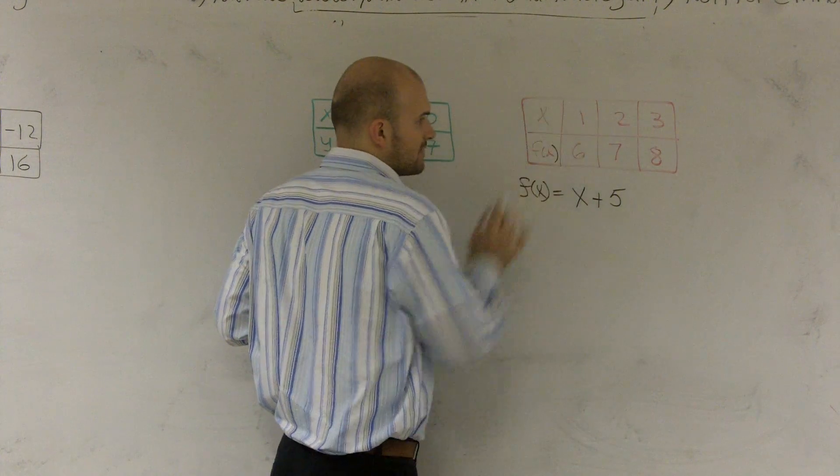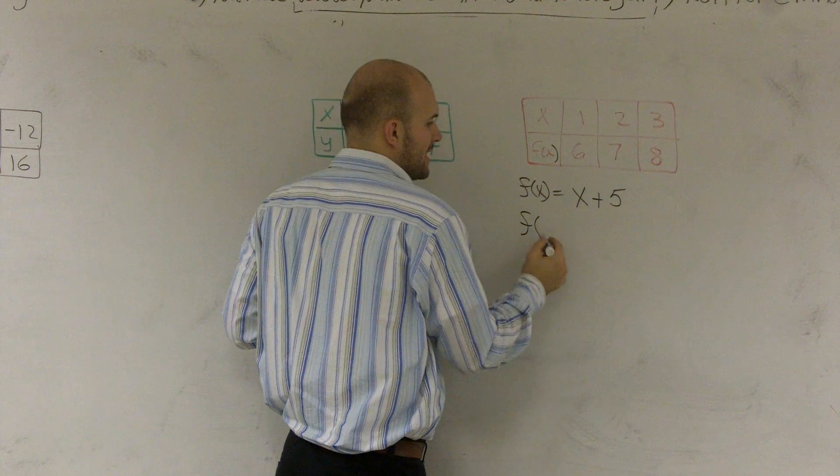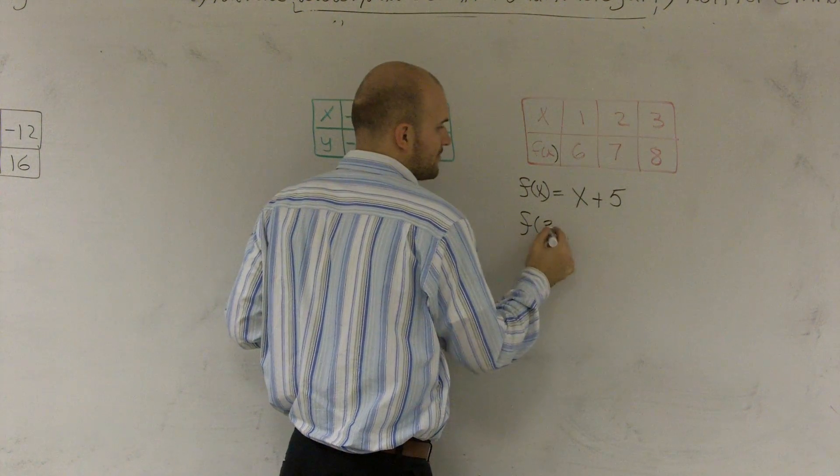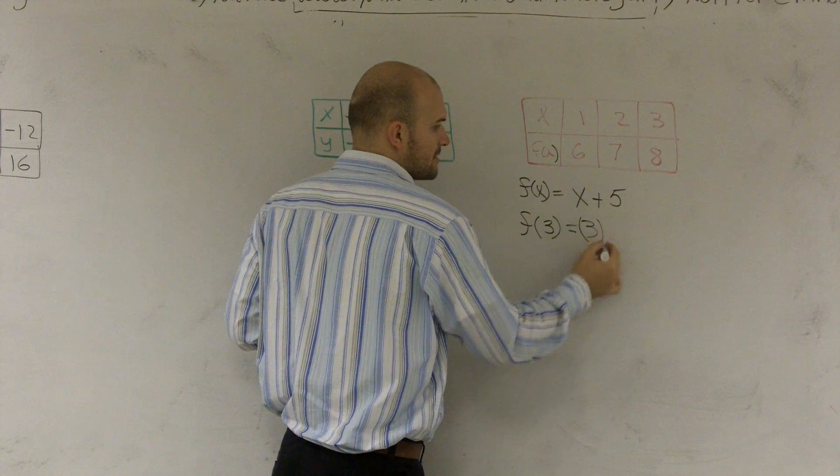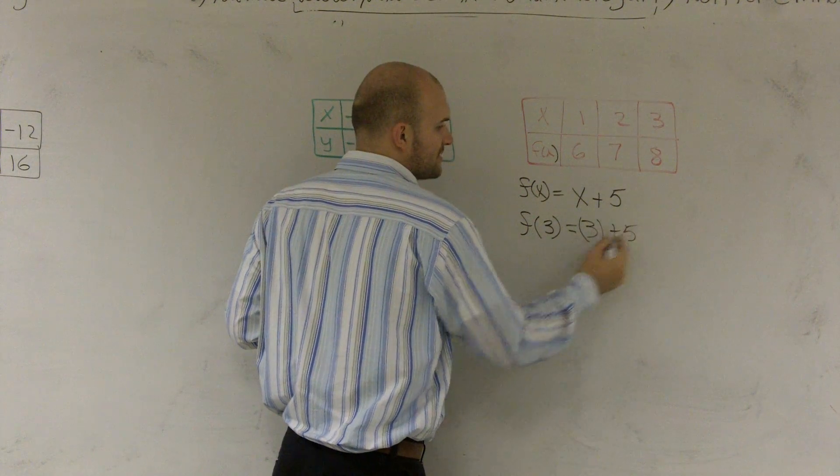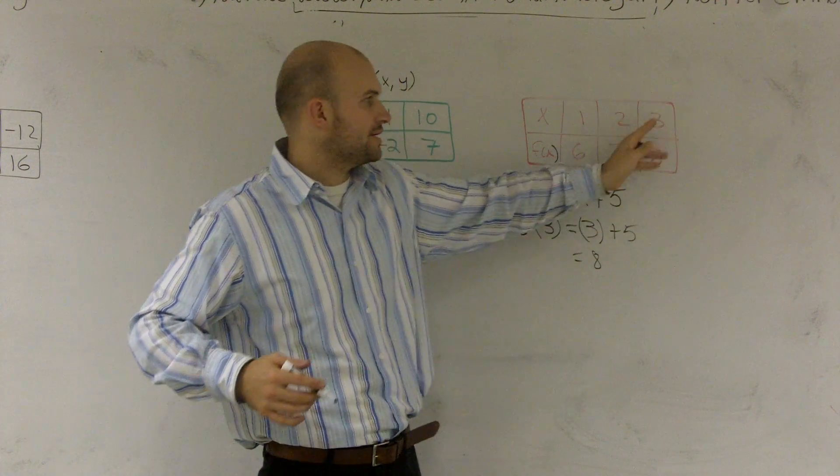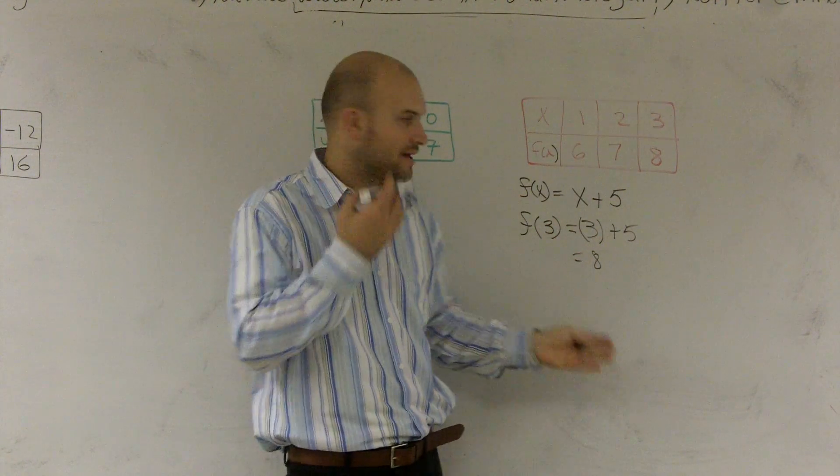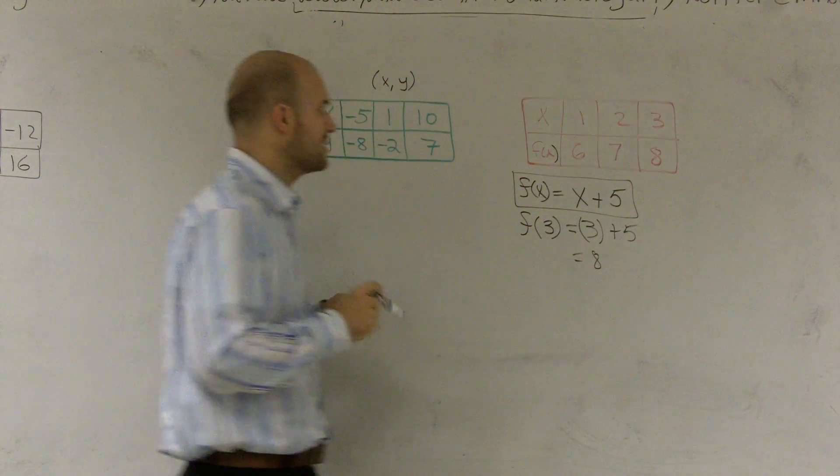any number I plug in for x is going to equal my f of x. Let's just practice one. f of 3 would equal, remember you plug in your 3 for your x, plus 5. 3 plus 5 is 8. If I wanted to find out other values, I would just plug in f of 4 and I'd find my other value. But when determining the rule or the equation, that's how I'm going to write it.